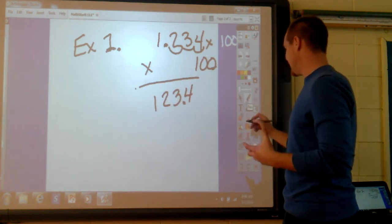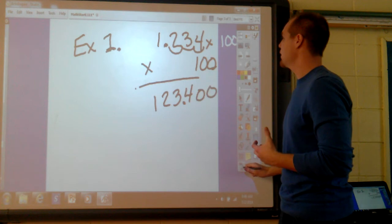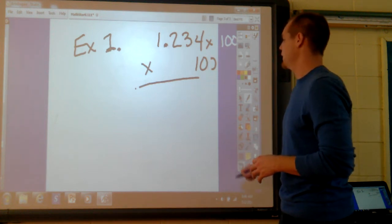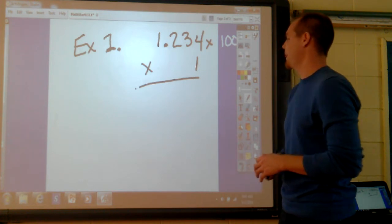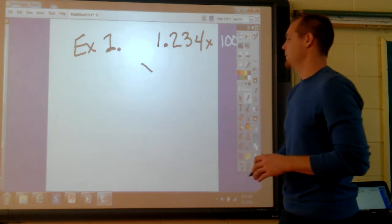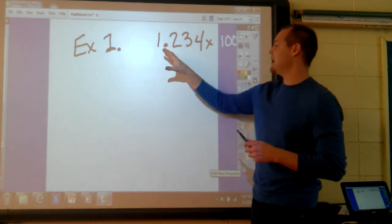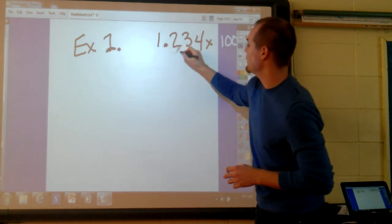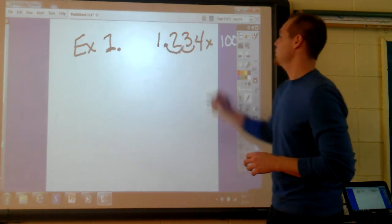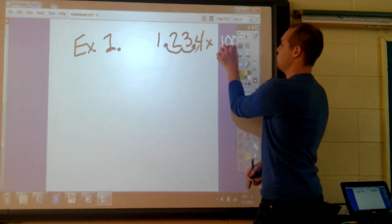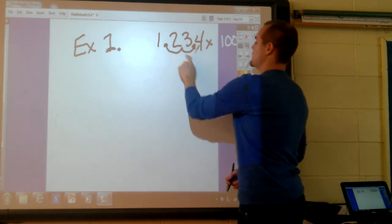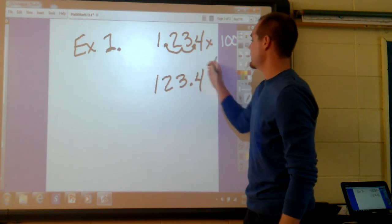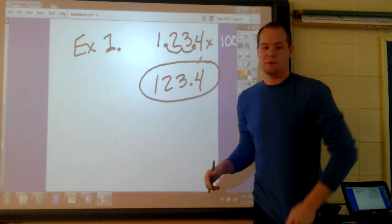But I know that when I have a number and I'm multiplying it by 100, I can also take and move my decimal two places to the right. I have two zeros here, 100. I move my decimal place two digits to the right. My answer ends up being 123 and 4 tenths for example one.